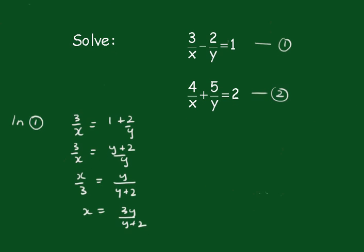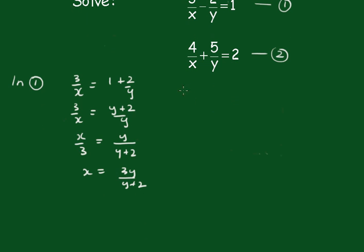Now we'll substitute that into 2. So in 2 we've got 4 on x, which is 4 times this reciprocal, that is y plus 2 over 3y plus 5 on y equals 2. This becomes 4 outside of y plus 2 on 3y plus 2 on 3y plus 2 on 3y.